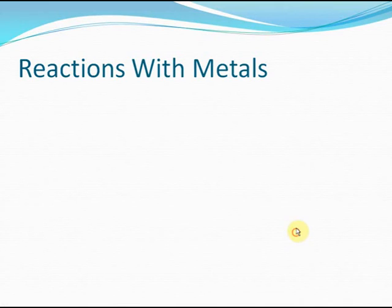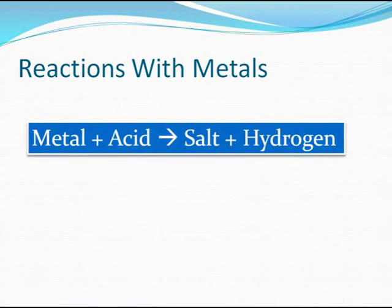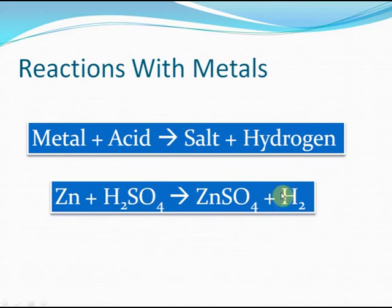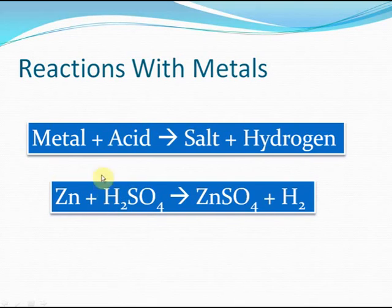Now let's study the chemical properties — how do acids react with metals? When an acid combines with a metal, it forms a salt and evolves hydrogen gas. Metal plus acid gives salt plus hydrogen. For example, zinc plus sulfuric acid H2SO4 gives ZnSO4 plus H2. Hydrogen gas is evolved and ZnSO4 is the salt formed. When you remove hydrogen from the acid, what is left — SO4²⁻ — reacts with the metal zinc to form ZnSO4.